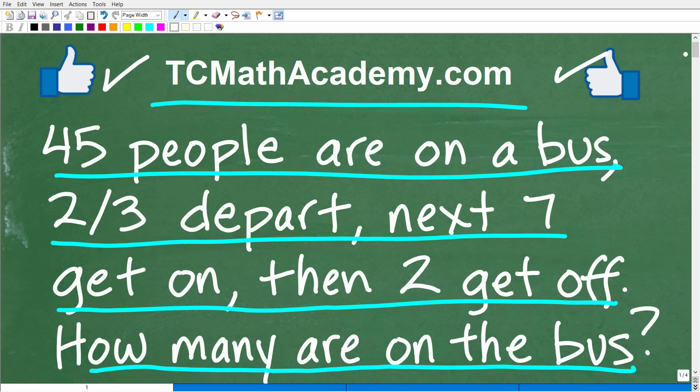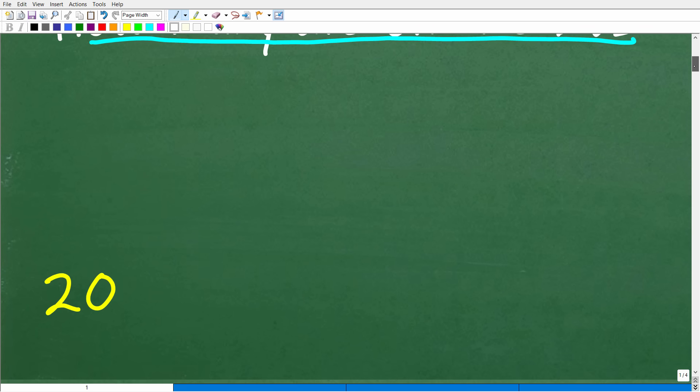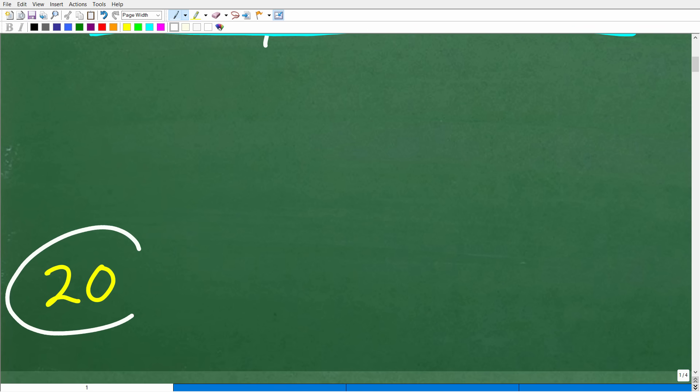Okay, so here is the problem. We have this bus. People are getting off, people are getting on, then people are getting back off. How many people remain after all this activity? Well, if you did this right, you would have come up with the answer of 20.